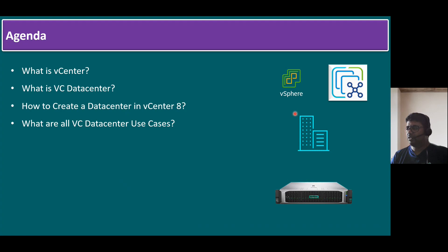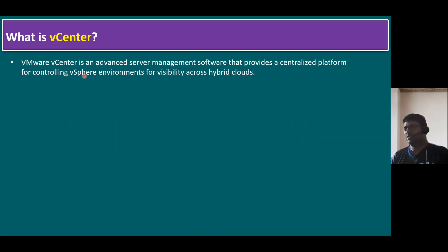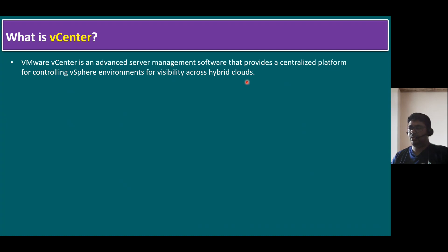One example is running this ESXi host on HPE compute nodes. Let's start with the first point: what is vCenter? As per VMware, vCenter is an advanced server management software that provides a centralized platform for controlling vSphere environments — that means ESXi hosts and virtual machines — for visibility across hybrid clouds. vCenter has the capability to integrate with hybrid cloud environments like VMC on AWS, VMware Cloud on AWS, VMC on Google Cloud Engine, and also Azure.